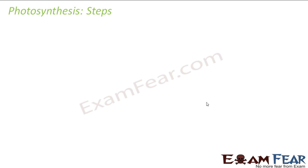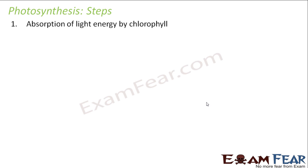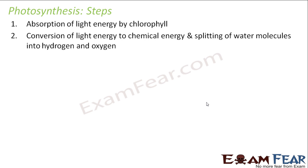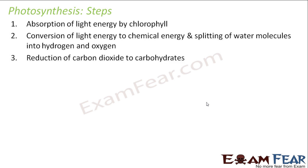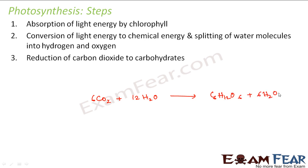Let us quickly review the steps of photosynthesis in order. First: absorption of light energy by chlorophyll — the green pigment present inside the leaves absorbs light energy from sunlight. Second: conversion of light energy into chemical energy and splitting of water molecules into hydrogen and oxygen. The water molecule splits into hydrogen and oxygen, which is why oxygen gets released. Third: carbon dioxide gets reduced to carbohydrate — glucose is a carbohydrate. The full equation is CO2 + H2O → C6H12O6 + 6H2O + O2.